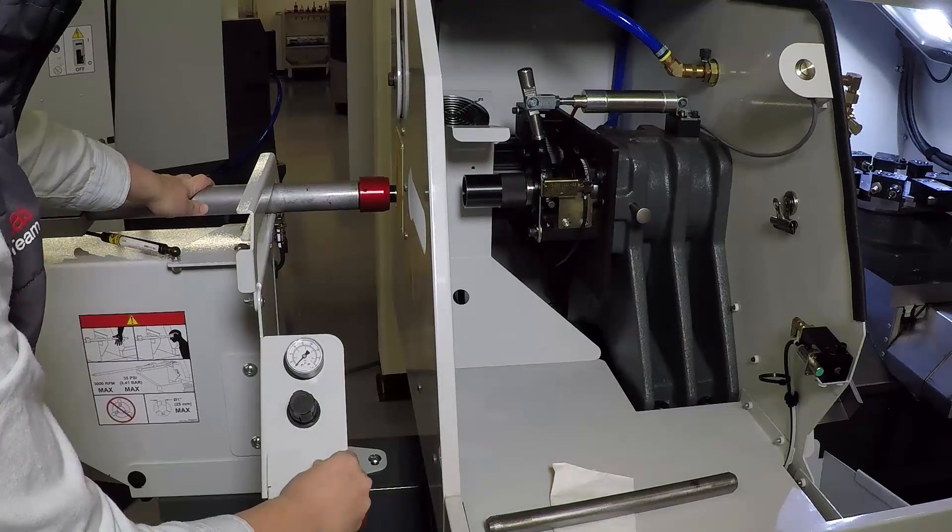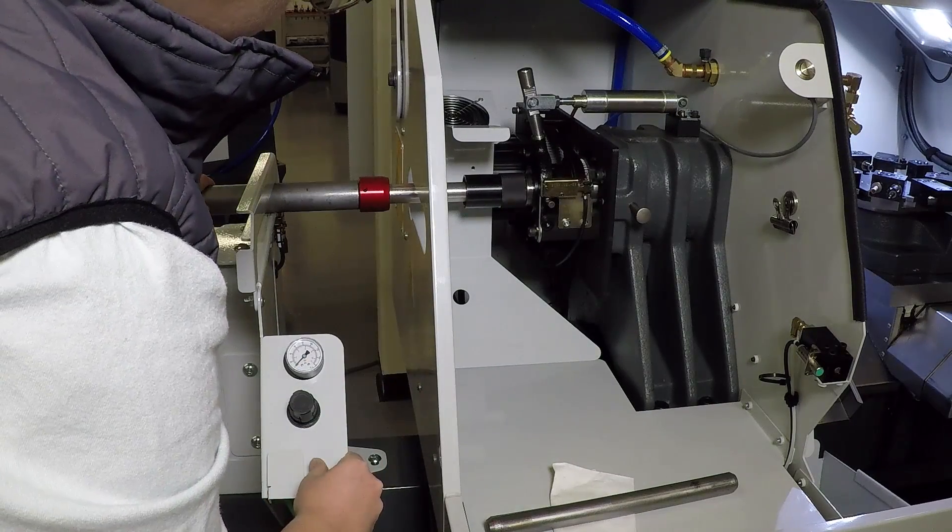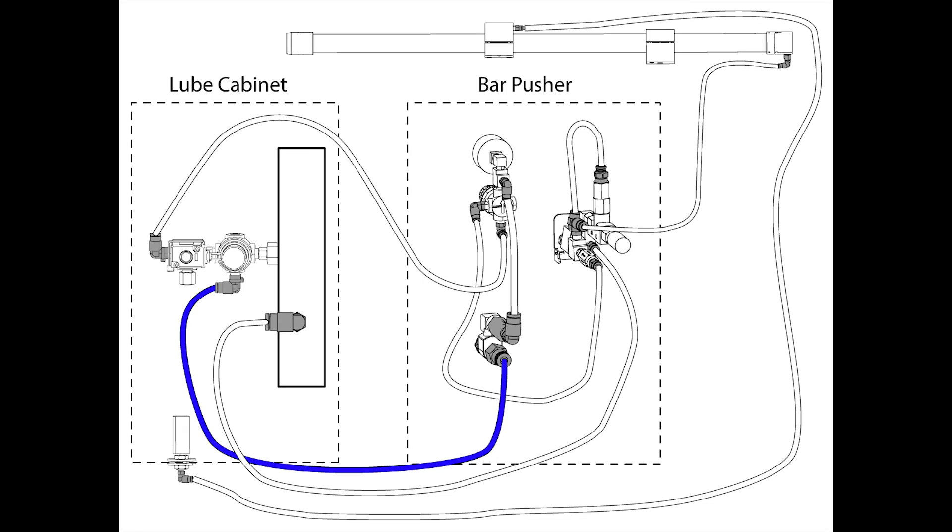You can use the black lever on the bar pusher to manually move the piston forward. Air will flow from the air regulator in the lube cabinet to the manual forward switch through the air regulator on the bar pusher to an orifice, passing the retract switch and then to the end of the piston.